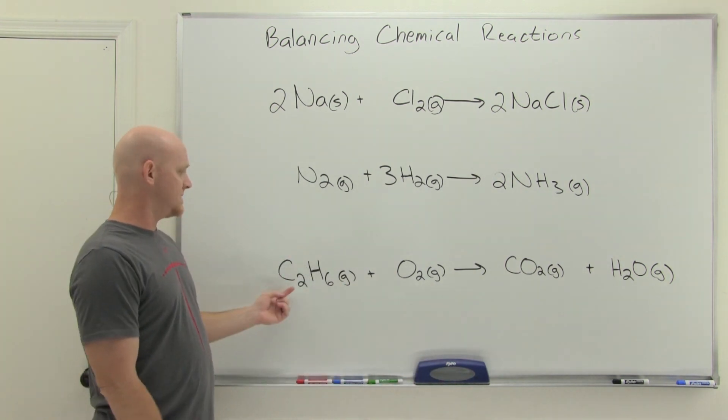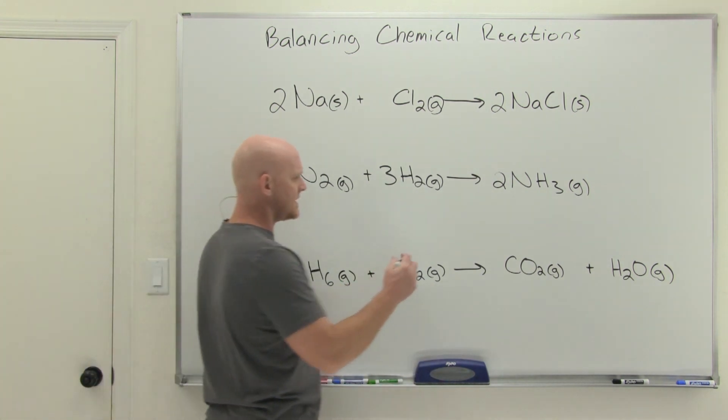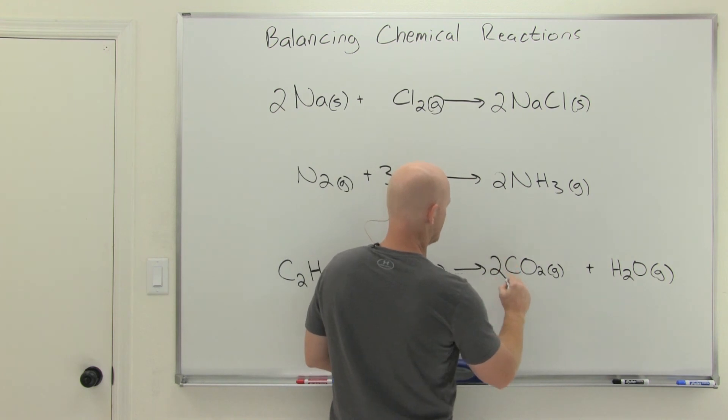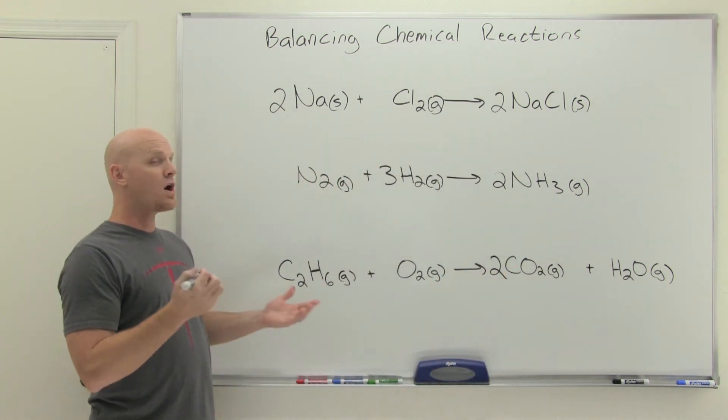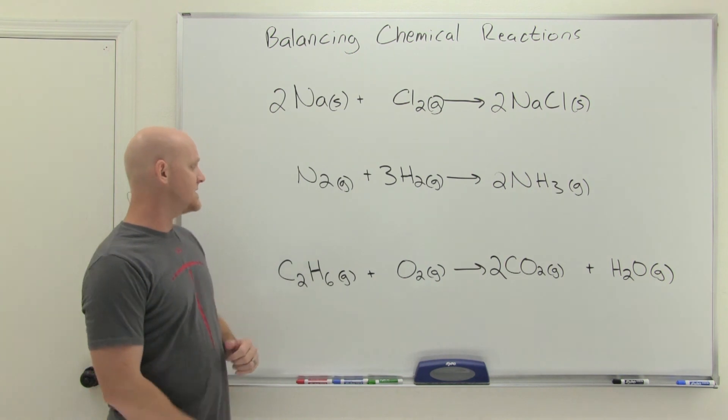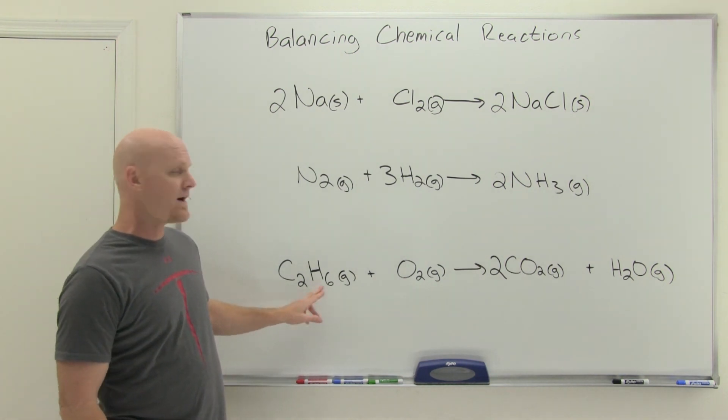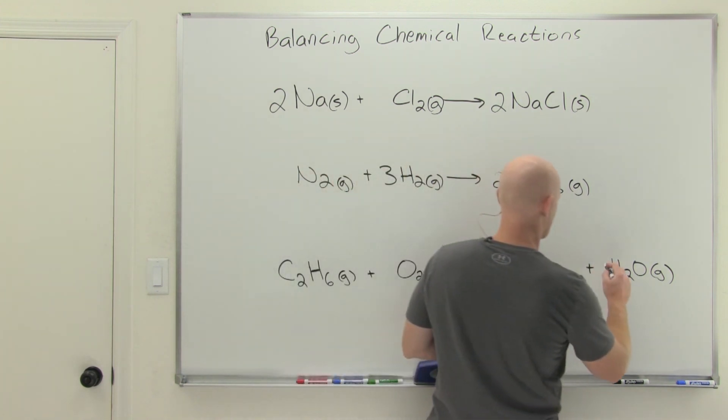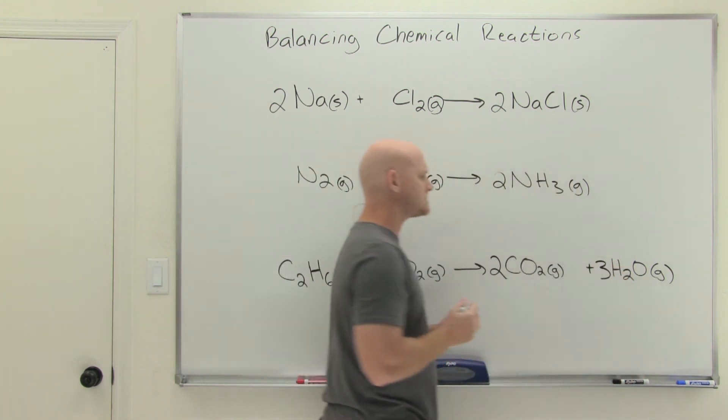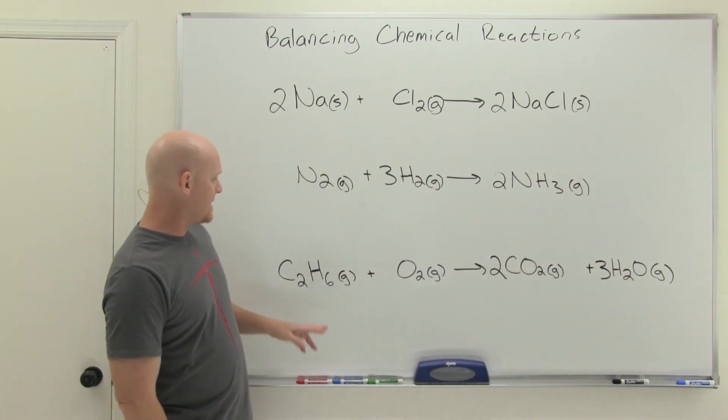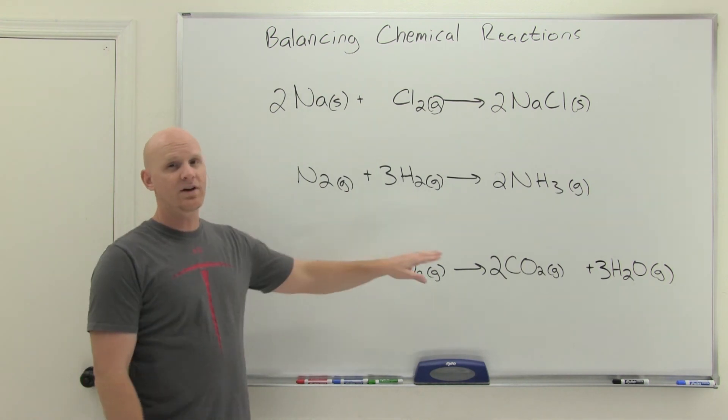So in this case, I'm going to start with carbon, and we've got two carbons here, so I'll put a two right here. Coefficient of two right there to make sure the carbons are balanced. And again, we're saving oxygen for the end, so let's do hydrogen next. And I've got six hydrogens here, so in this case, to make sure the hydrogens get balanced, I'd have to put a three right here. And now I've got six H atoms on both sides of the arrow.